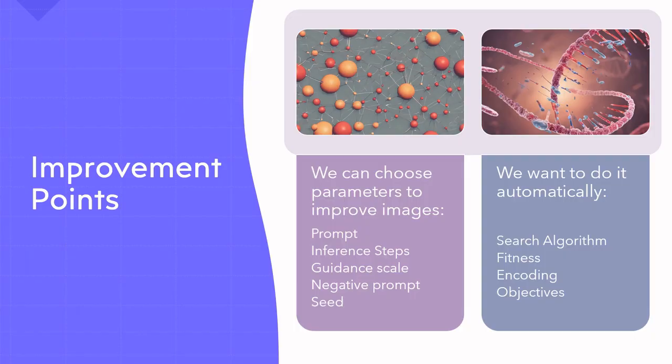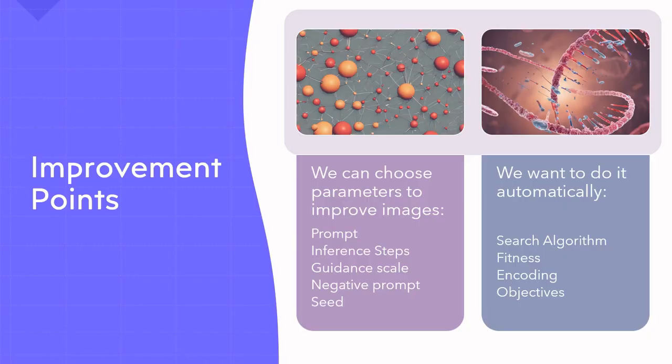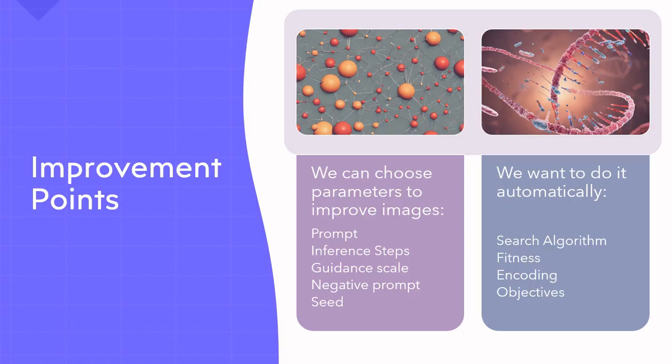What do we need to improve in this model? We start by analyzing its specific parameters. Apart from the prompt, we have other parameters: we have the inference steps — how much the system iterates the image to produce a better quality image. But that's not necessarily true, because having too many iterations might actually produce a worse image. Then you have the guidance scale — like the temperature of the model: more imaginative or more concrete.